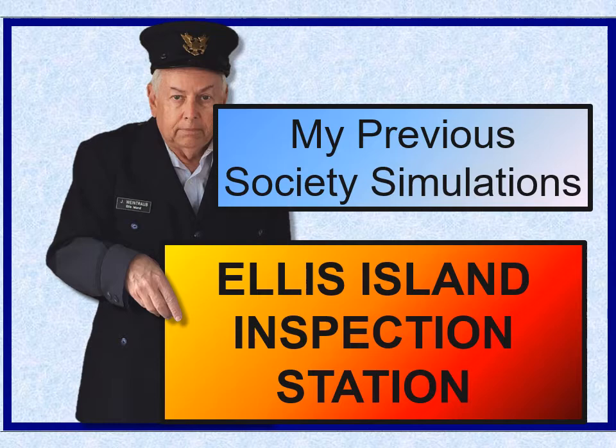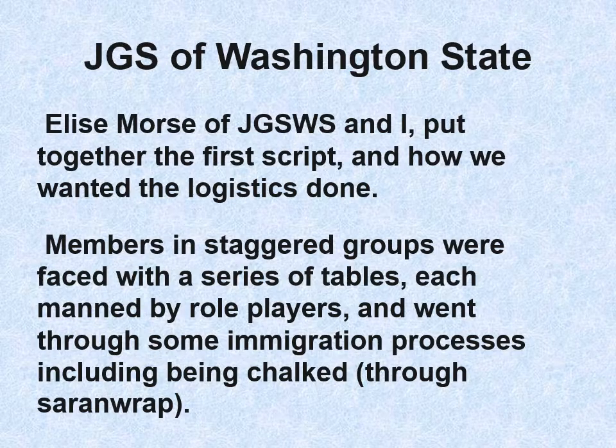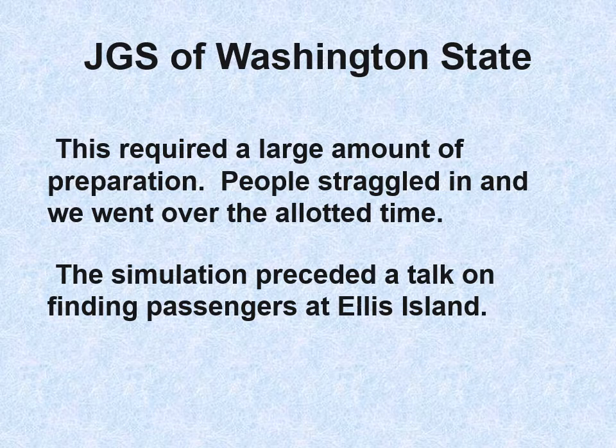My first major society simulation was for the JGS of Washington State. Elise Morse and I put together the first major script and logistics. Members came in in staggered groups entering 'Ellis Island,' faced a series of tables each manned by role players, and went through immigration processes including stamping documents and being chalked through saran wrap. This required a large amount of preparation, people straggled in, and we went over the allotted time. The simulation preceded a talk by me on finding difficult passengers at Ellis Island.